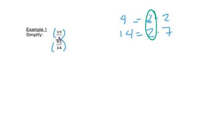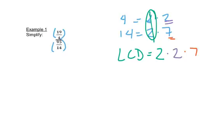Those two share a factor of 2 in common, so we write the 2 once, then bring down the other 2, and then the 7. So our LCD ends up being 4 times 7, which is 28.